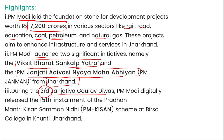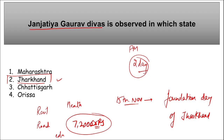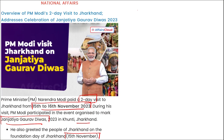During the third Janjatiya Gaurav Divas, PM Modi digitally released the 15th installment of the Pradhan Mantri Kisan Samman Nidhi scheme at Birsa College in Khunti, Jharkhand. Regarding Jharkhand: Chief Minister is Hemant Soren, Governor is CP Radhakrishnan, and the capital is Ranchi.